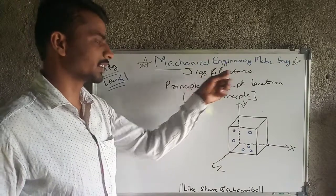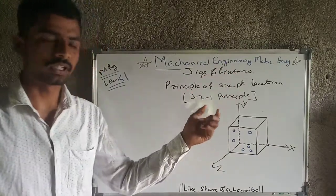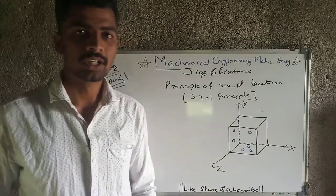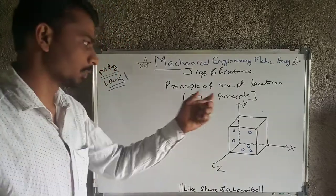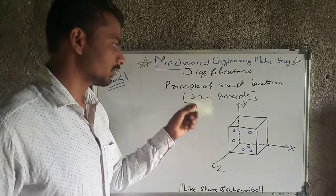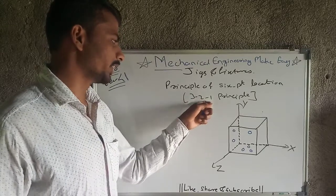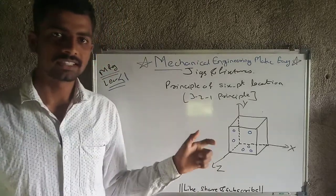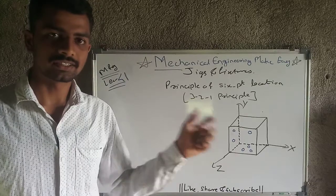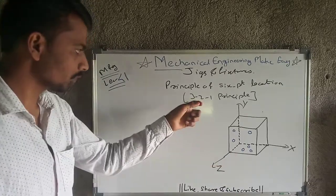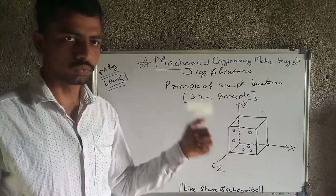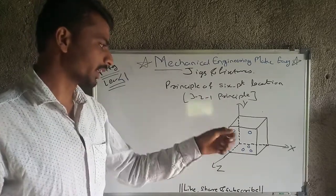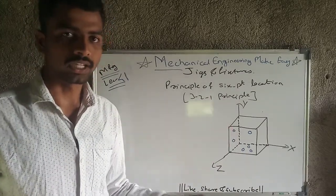In the previous lecture we started a new topic — jigs and fixtures. Today we are going to move with the principle of six point location. Another name for this is the 3-2-1 principle. What exactly is it? The work piece is completely restrained with the help of three locating points on one plane, two locating points on another plane, and one locating point on the next plane.